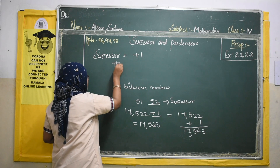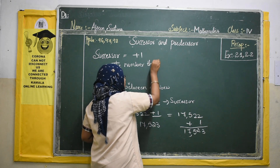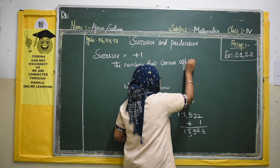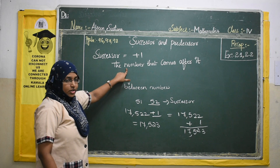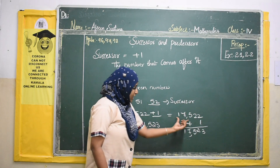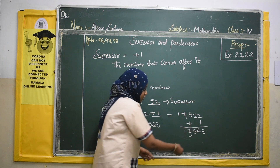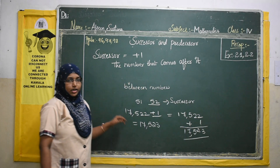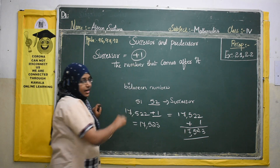Successor means the number that comes after it. Whatever the given number, we will add 1 to it and write the answer. We have seen that for 17,522, we added 1 and got 17,523. So successor means plus 1 — we will add 1 to the given number.